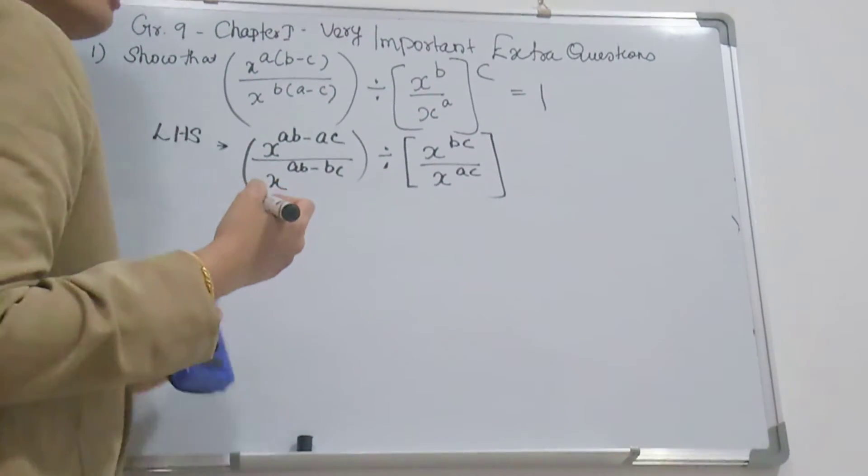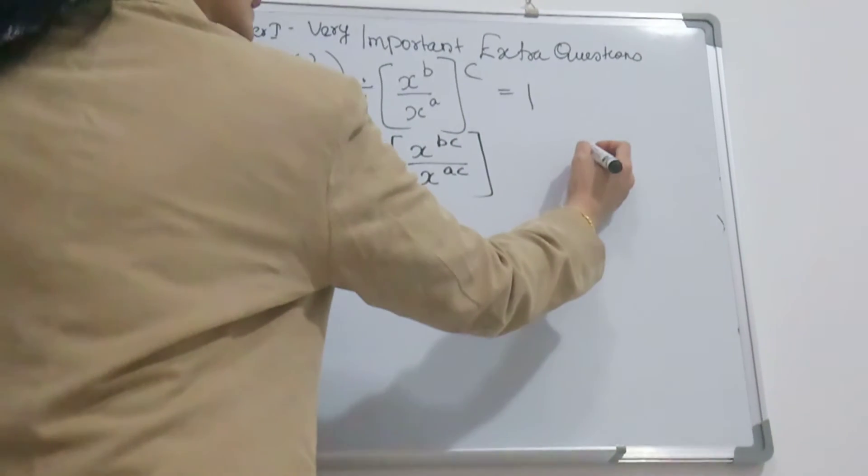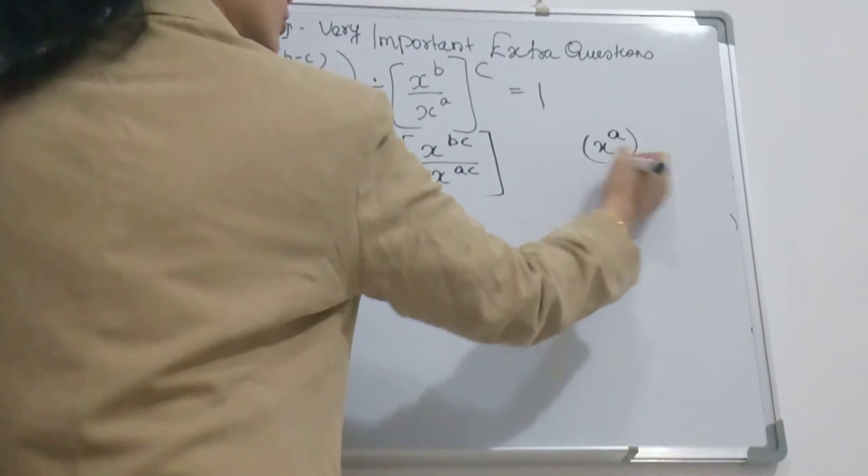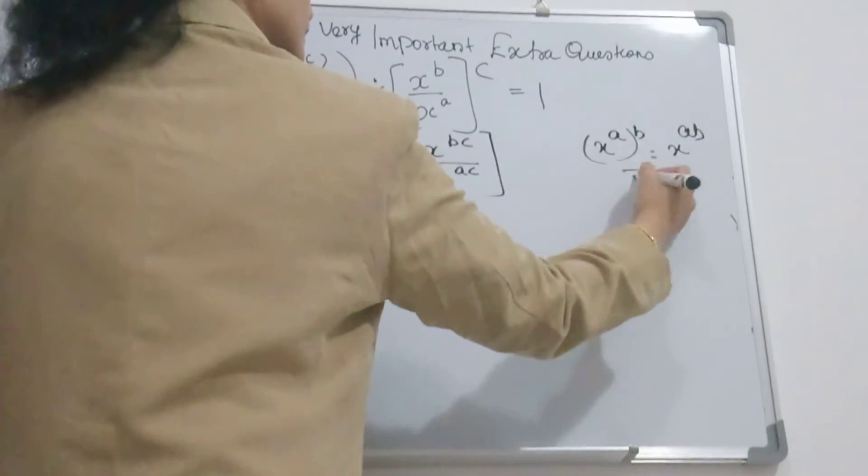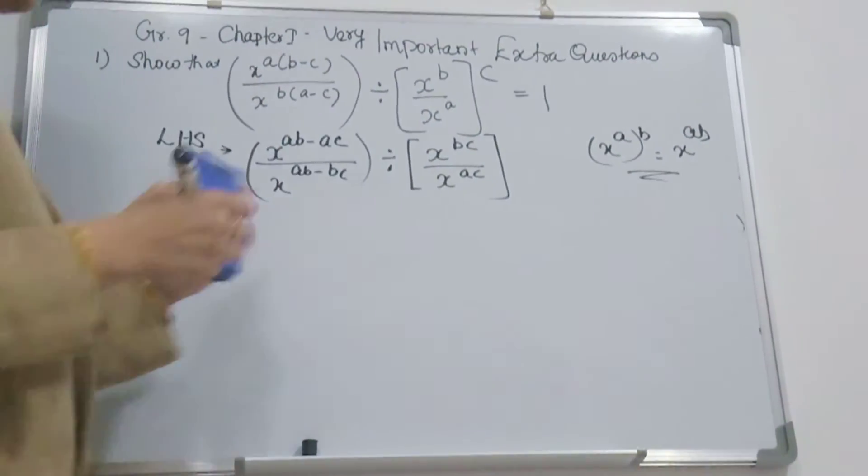Which exponent law did you use here? x^a whole to power b equals x^(ab). This law for exponents we used here.